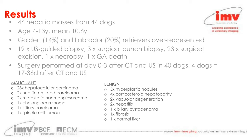Looking at the malignant and benign diagnoses: hepatocellular carcinoma was the most common malignancy, alongside undifferentiated carcinomas, metastatic haemangiosarcomas, one cholangiocarcinoma, one biliary carcinoma, and one spindle cell tumour. In the benign group there were hyperplastic nodules, steroid hepatopathy, vacuolar degeneration, hepatitis, biliary cystadenoma, fibrosis, and one case of normal liver — which is interesting to consider how these changes can look similar to malignant ones when scanning.